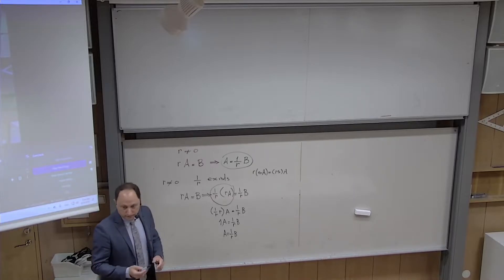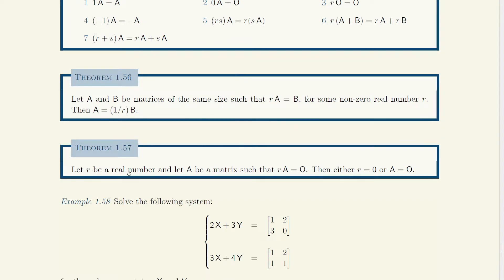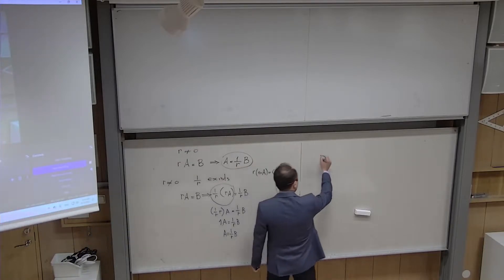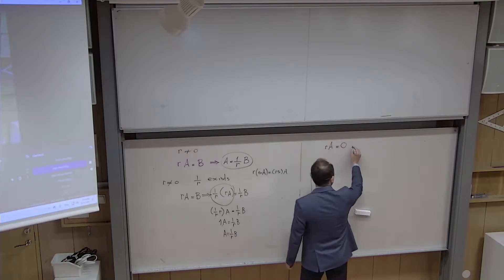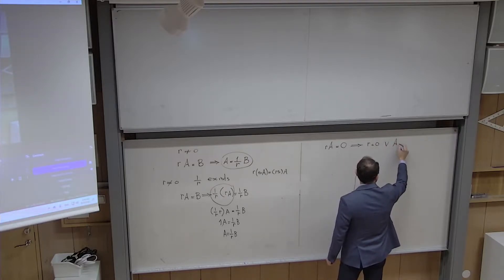There is also another rule similar to the zero product rule: if you have a number R multiplied by a matrix A and the answer is the zero matrix, this can happen only if at least one of these is zero — either R is the number zero, or A is the zero matrix.